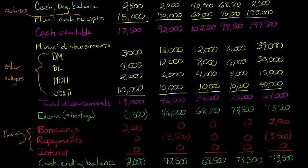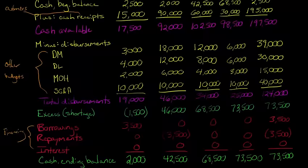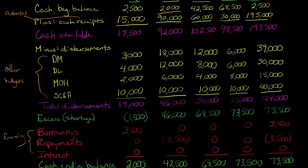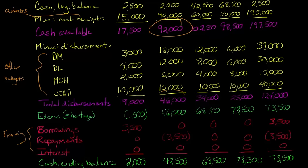Now let's scroll up to see all the quarters — that was all for quarter one. In quarter two, I'll walk through more quickly. We start with $2,000 — the beginning balance of quarter two is the ending balance of quarter one. We're now receiving $90,000 from customers, which came from our sales budget, making cash available $92,000. Disbursements come from our other budgets — direct material, SG&A, and so forth — totaling $46,000. Cash available of $92,000 minus disbursements of $46,000 leaves us with $46,000 excess.